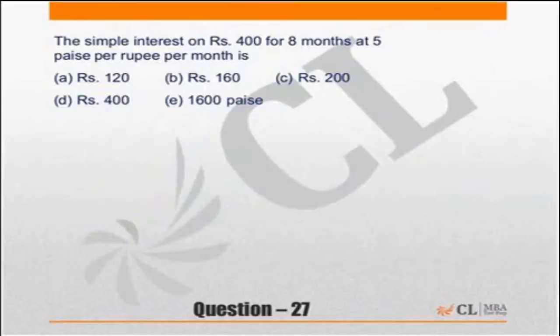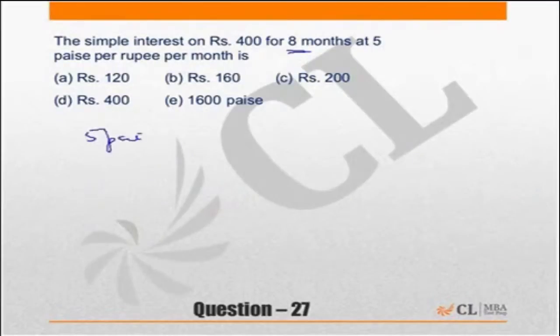Simple interest for 8 months. The time period is 8 months — that is not a problem. The rate of interest given is 5 paise per 100 for every 4 months.